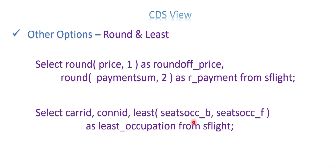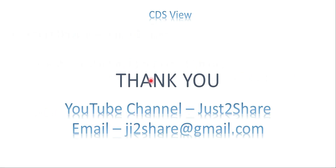LEAST returns the least value across multiple fields for each record. Unlike MIN which finds the minimum across rows for one field, LEAST compares multiple fields within a single record. For example, in a flight table with business class and first class columns, LEAST(business_class, first_class) tells you which class has the least bookings per record. More than two fields are also supported.